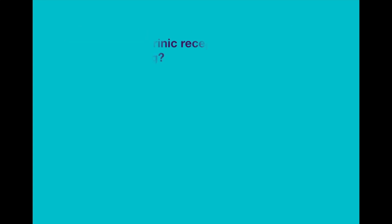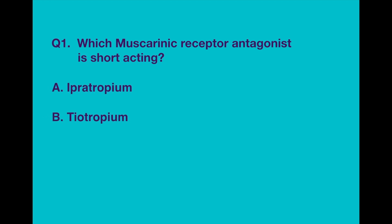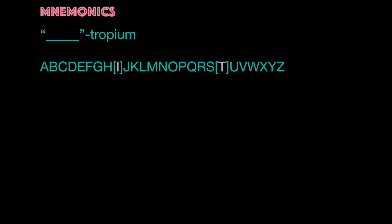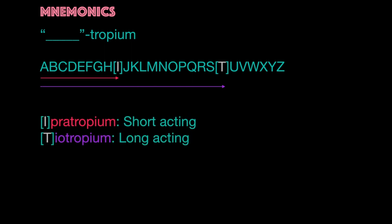Question number one. Which muscarinic receptor antagonist is short-acting? Option A: Ipratropium. Option B: Tiotropium. The correct answer is option A, Ipratropium. I mentioned a trick to remember this in my previous video. Since the arrow to I is shorter than the arrow to T, we can remember that ipratropium is short-acting and tiotropium is long-acting.